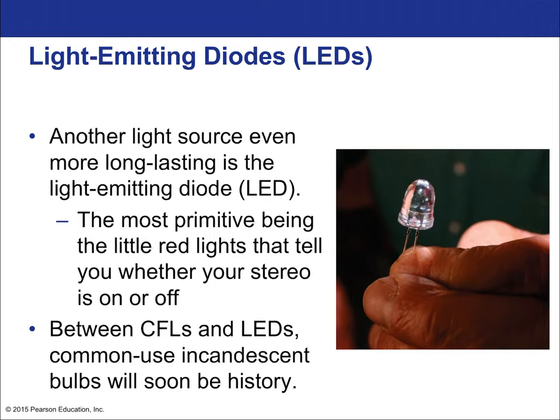LEDs are another light source — even more long-lasting. The most primitive being the small red lights that tell you whether your stereo is on. Now they've gotten much brighter, more efficient, and able to replicate light bulbs in your home. LEDs often have a temperature listed on them — but the LED isn't hot to the touch. That temperature corresponds to Wien's law, which maps color to temperature. An LED listed at 5,600 Kelvin corresponds to the surface of the sun in terms of black-body radiation — not literally that hot, but producing a sunlight spectrum that can make the light feel more natural.